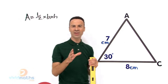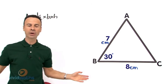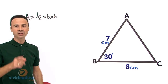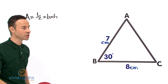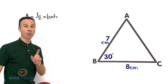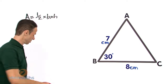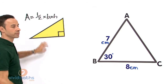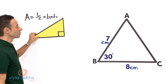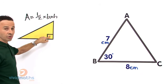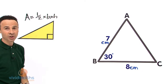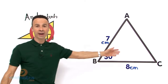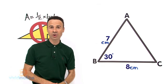We cannot use that because if they have not given us the height, then clearly we cannot use it. So a half times base times height — I just remembered, and you might notice, that formula is for a right angle triangle. When you have a right angle triangle that has got the right angle at 90 degrees, you cannot use that formula for a non-right angle triangle. So this is a non-right angle triangle.